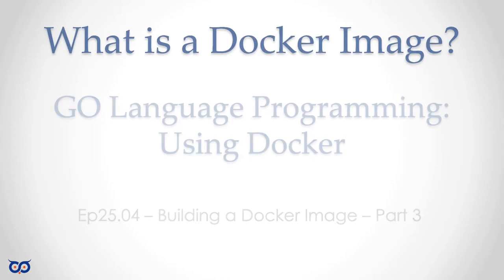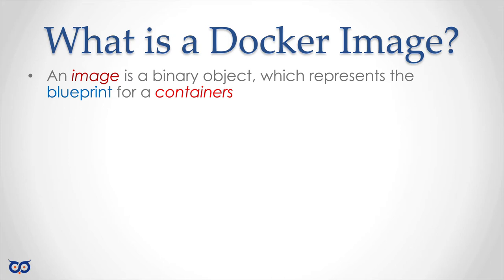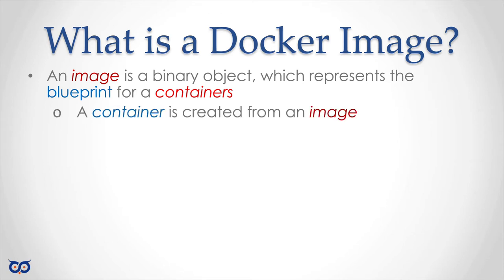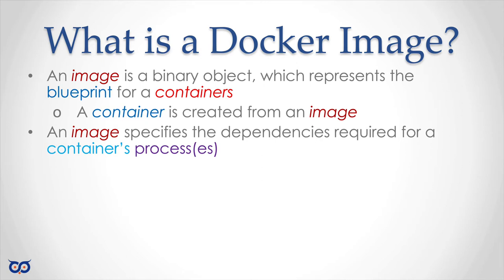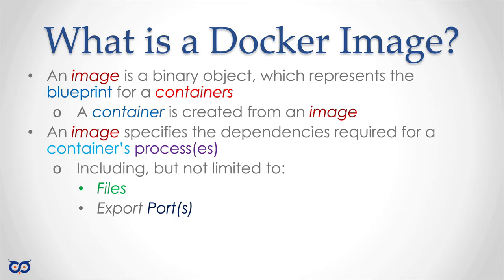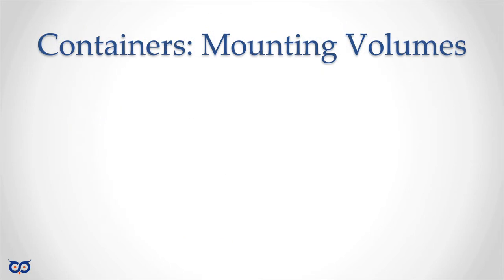Let's get started. If you remember, we talked about what a Docker image is — just to recap so we're all on the same page: it's a binary object that contains things that allow you to create a container. Once you have a running container you can have files in it, export ports, and define those in the image. Today we're going to look at mounting paths — I'll use 'path' and 'volumes' interchangeably, and you'll see why.